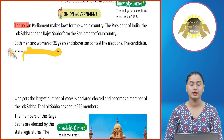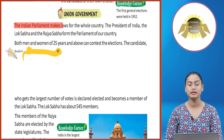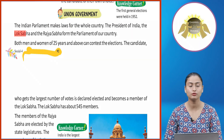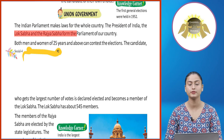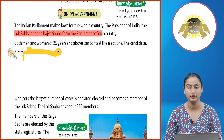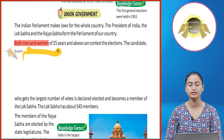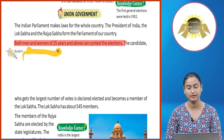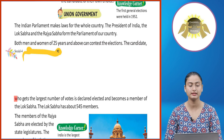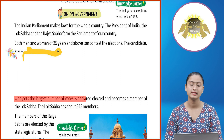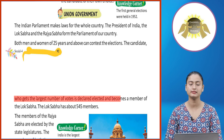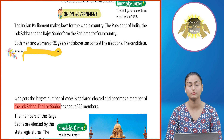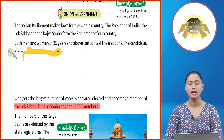Union Government: The Indian Parliament makes laws for the whole country. The President of India, the Lok Sabha, and the Rajya Sabha form the Parliament of our country. Both men and women of 25 years and above can contest the elections. The candidate who gets the largest number of votes is declared elected and becomes a member of the Lok Sabha. The Lok Sabha has about 545 members.